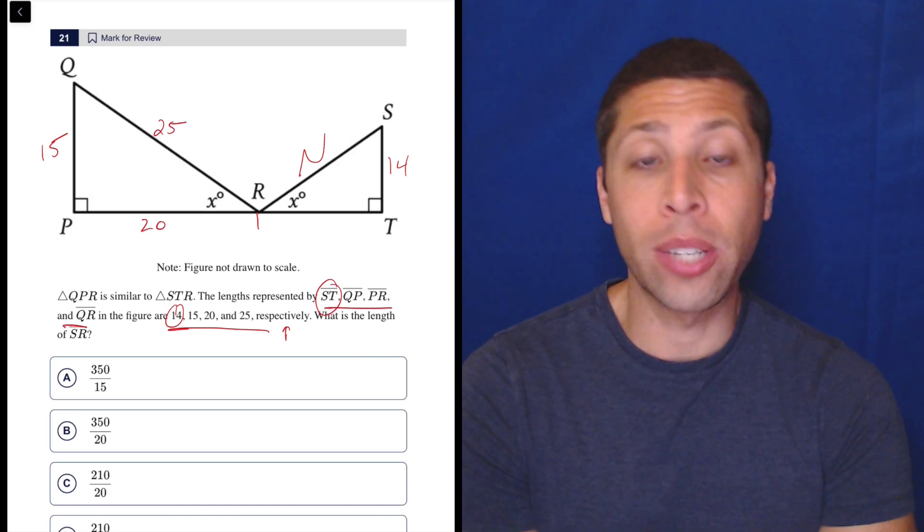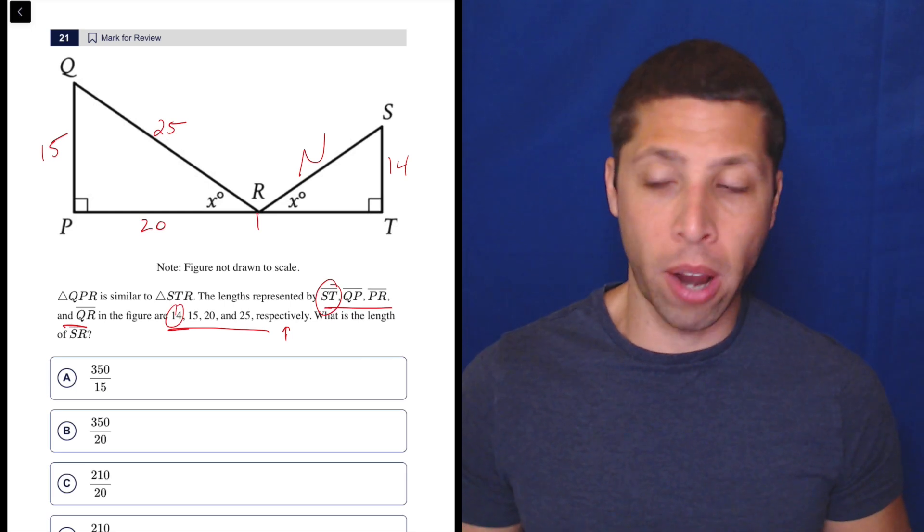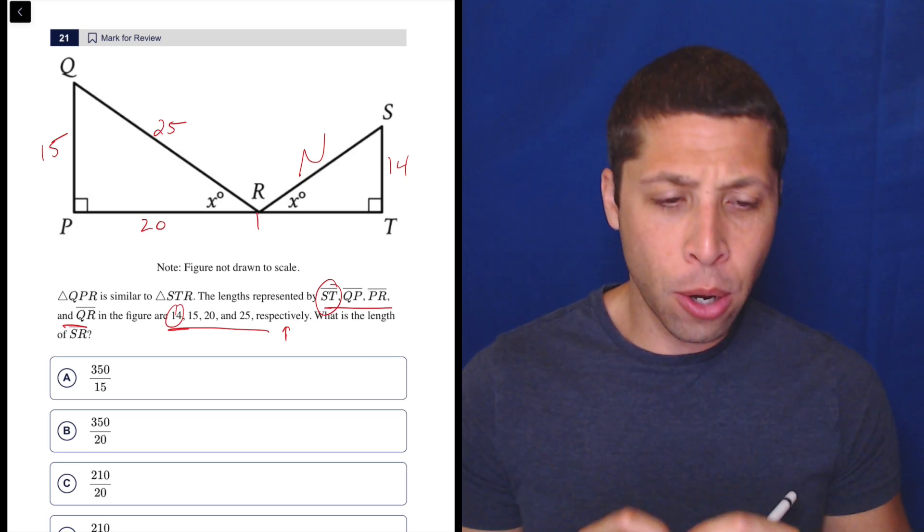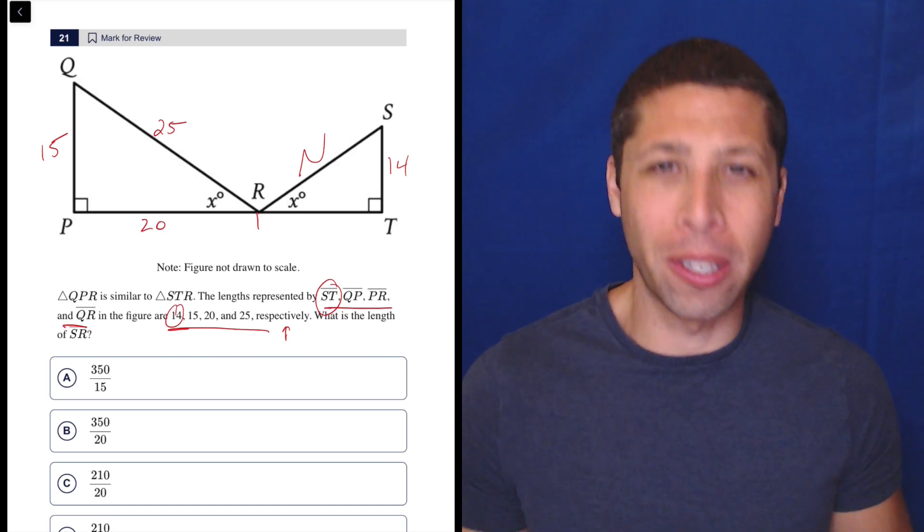Well, the reason that is there is to tell us how these sides correspond. So basically the way I think of it with similar triangles is if I do have an angle, I know that the sides that are both opposite that same angle are going to be the ones that are in proportion.